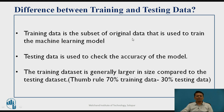The training dataset is a subset of the original data and is used for developing the machine learning model. Once the model is developed, I want to evaluate its performance, so I will use the testing data. The test data gives you performance measures, like the accuracy of the model.